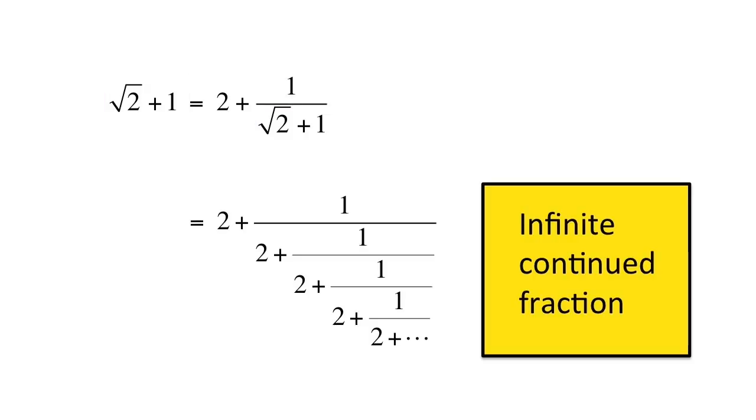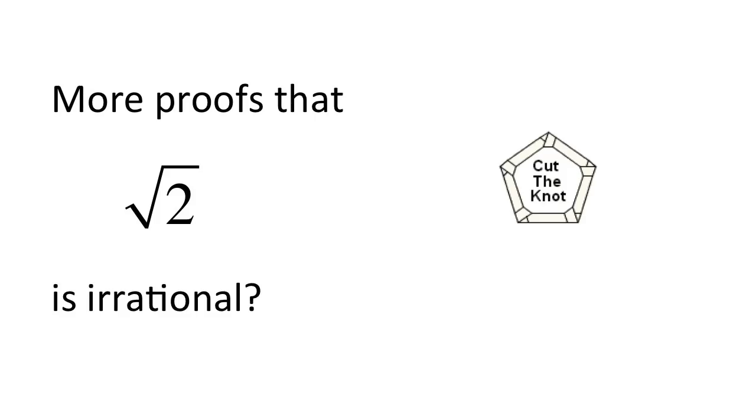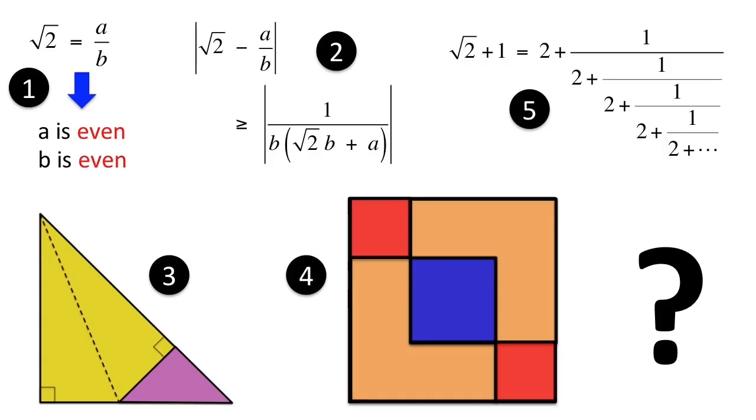So, root 2 plus 1 cannot be rational, and so root 2 itself is also irrational. If you want to see many other proofs that root 2 is irrational, go to cutthenot.org. So, which of these is your favorite proof?